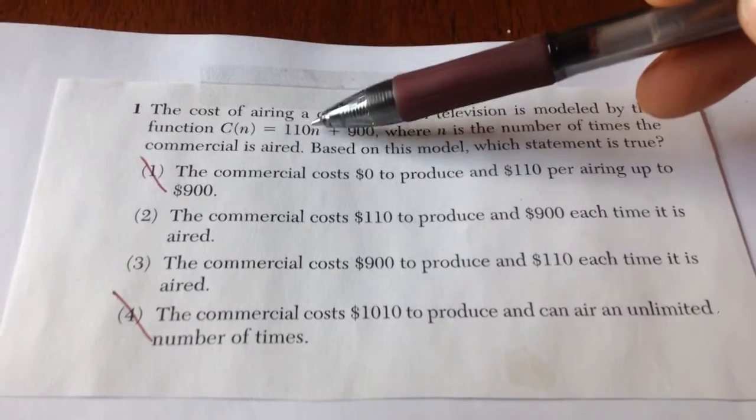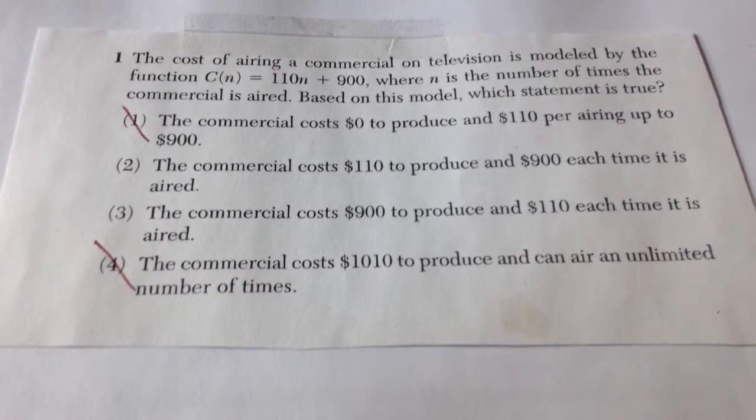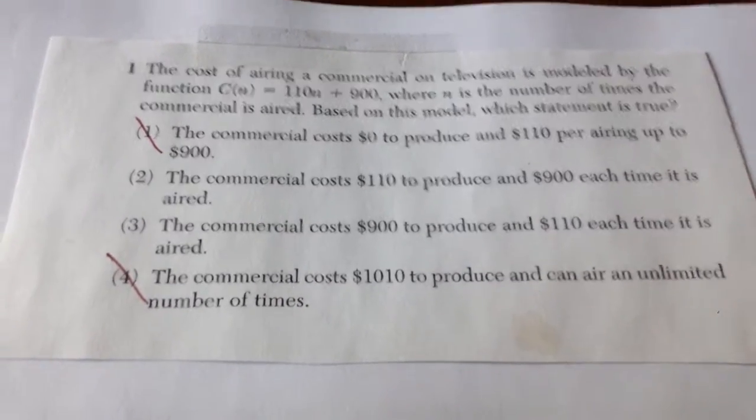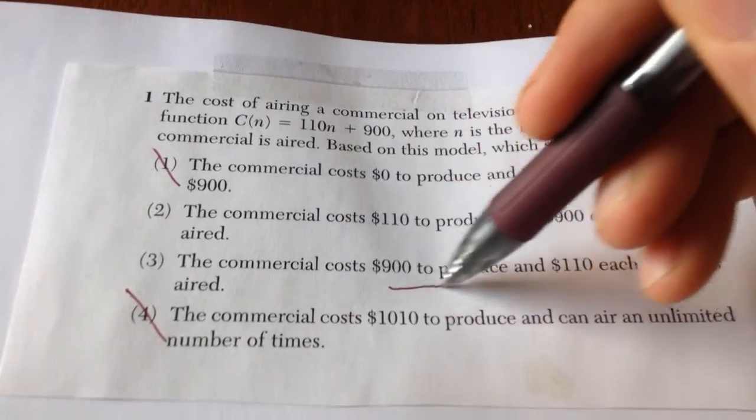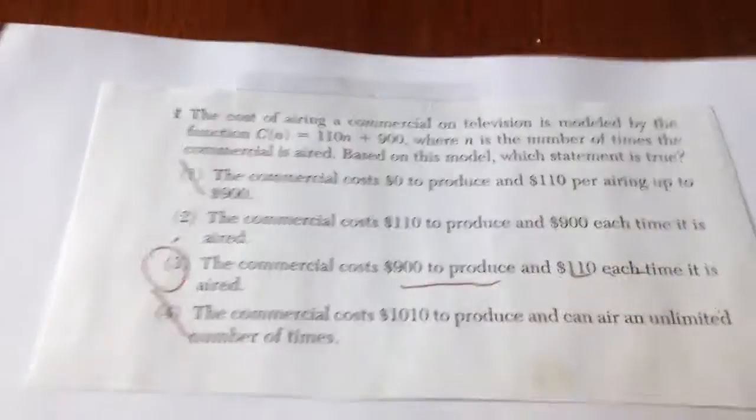110, because it is coupled with the variable, we know that we're going to be paying 110 dollars for every time that it airs. Anytime you see for each or a rate or per, you're thinking about multiplication with these problems. So 900 dollars it costs to produce, this is your constant cost, and 110 each time it airs. Choice three.